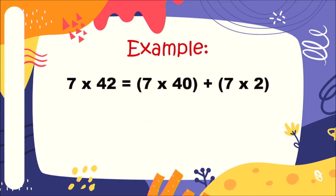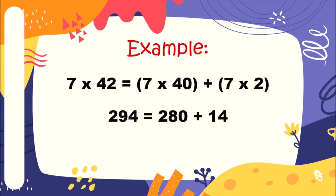Another example: seven times 42 is equal to seven times 40 plus seven times 2. We use the expanded form to separate 42. Seven times 42 equals 294. Now for the parts: seven times 40 equals 280, and seven times 2 equals 14. We add: 280 plus 14 equals 294. So 294 is equal to 294 — both answers match.